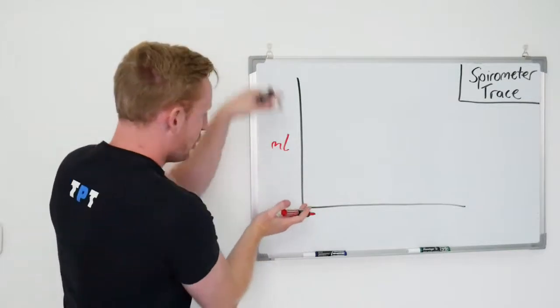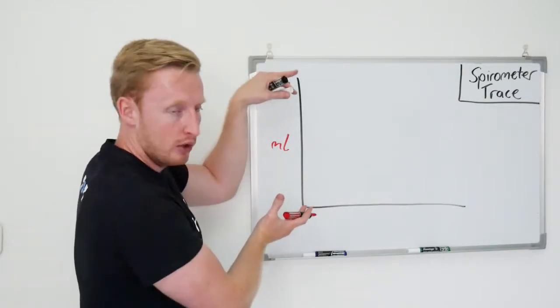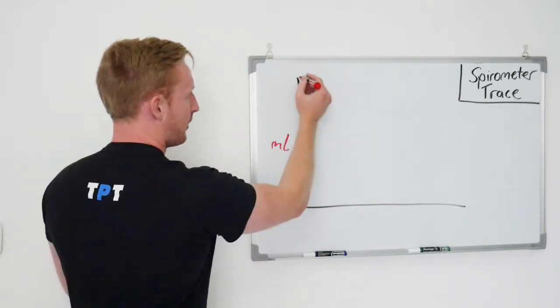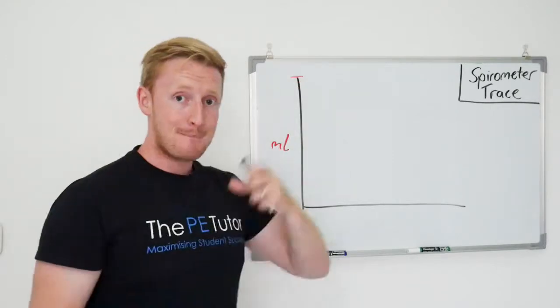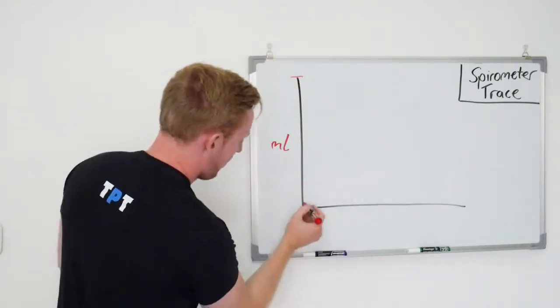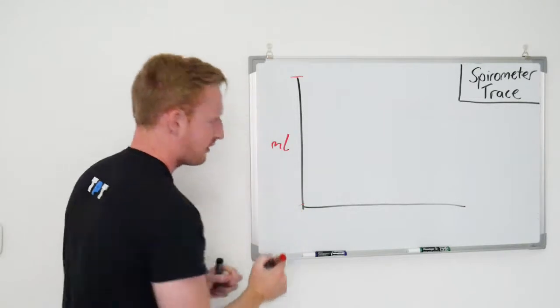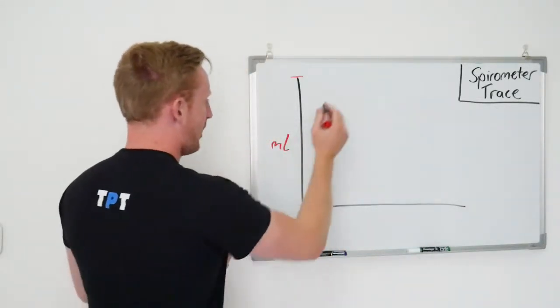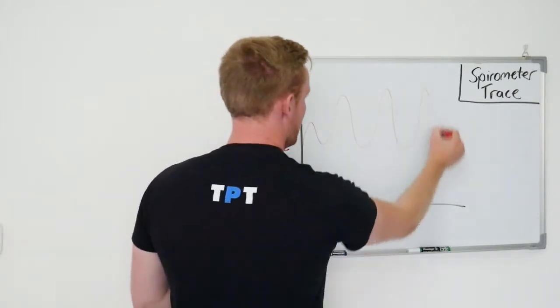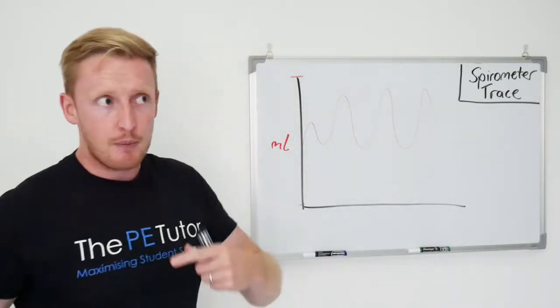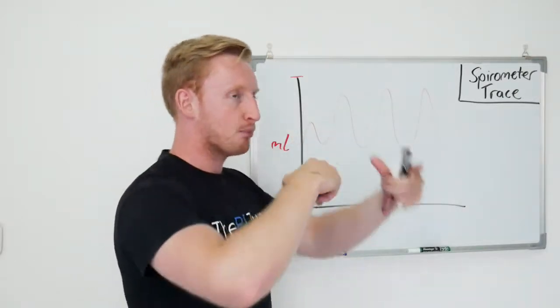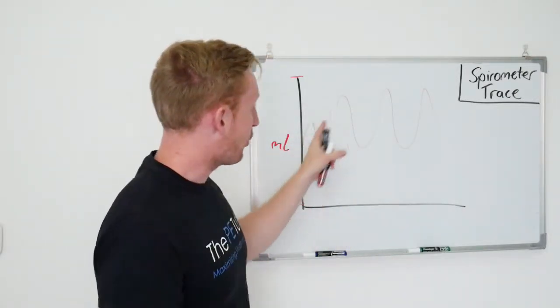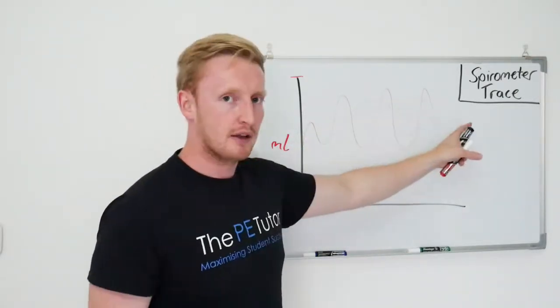So it's a measure of volume, and whenever the line is close towards the top, that's where we've got maximum fill, and whenever the line is close to the bottom, that's when we've got maximal empty. Now the line is going to look like some sort of squiggle in between, but someone's breathing rate and breathing depth corresponds to what that line does.